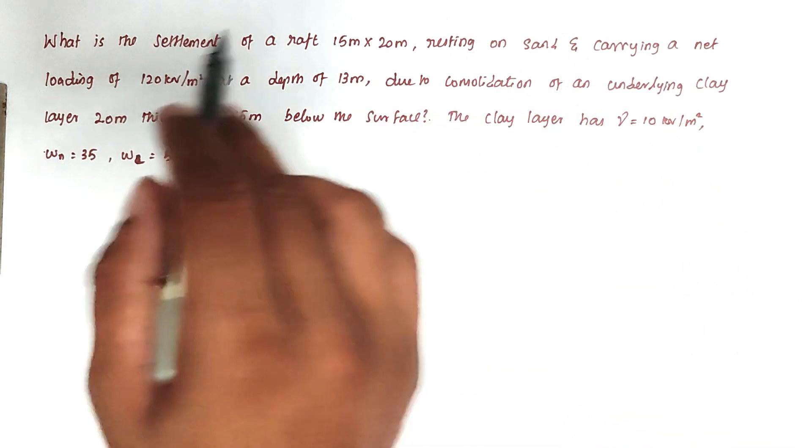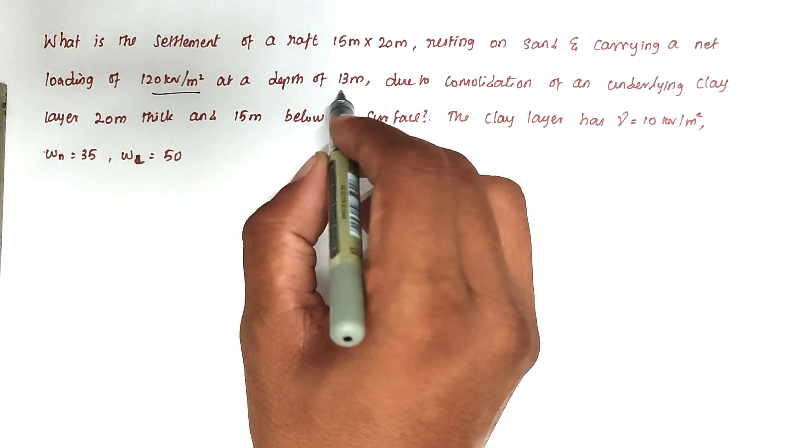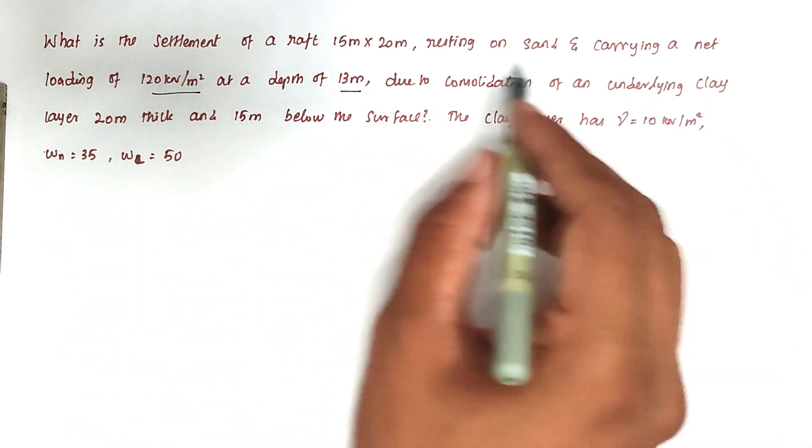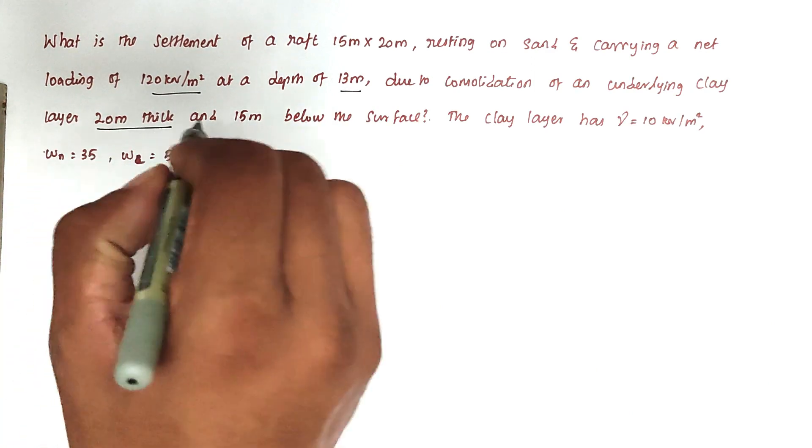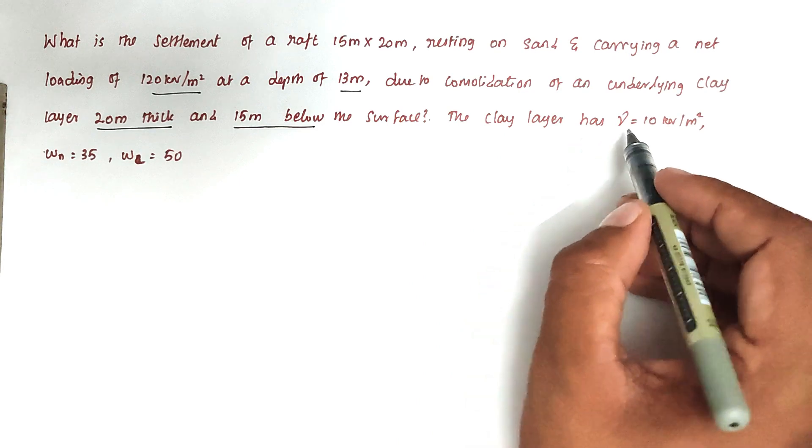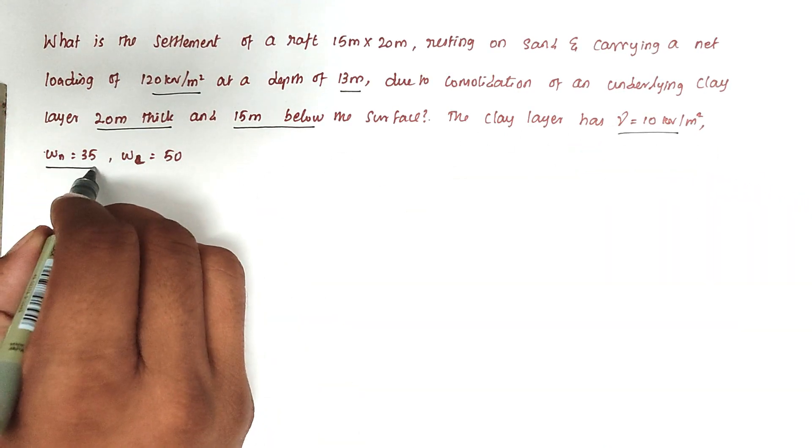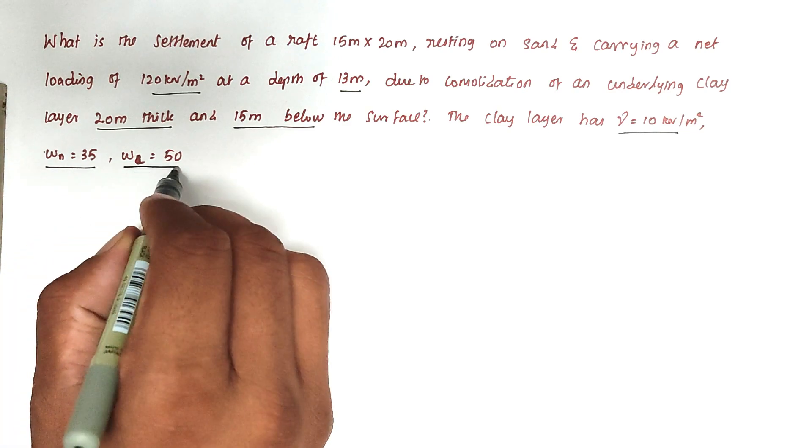At a depth of 13 meters, due to consolidation of an underlying clay layer 20 meters thick and 15 meters below the ground surface. The clay layer has unit weight 10 kilonewton per meter cube, water content is 35 percent, and liquid limit is 50 percent.